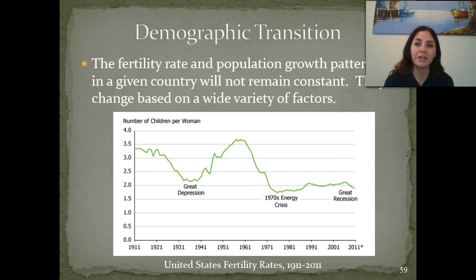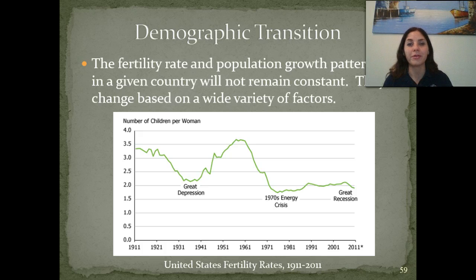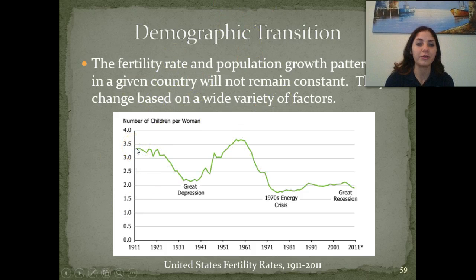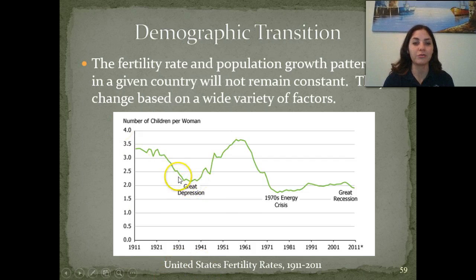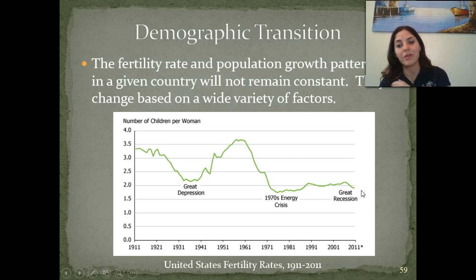Demographic transition — the fertility rate and population growth patterns in a given country will not remain constant; they're always going to be fluctuating. Looking at the United States fertility rate, we had about 3.25 average children per woman. Then the Great Depression hit and the fertility rate drastically dropped. Then we start increasing again — baby boomers came along — and then the 1970s energy crisis hit and we had another dip. It stays kind of steady, and then the Great Recession hits and we see a little more of a dip, which continues even today.